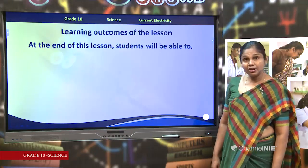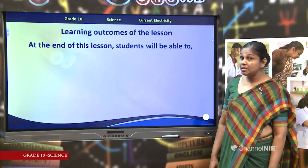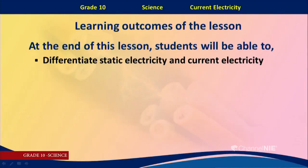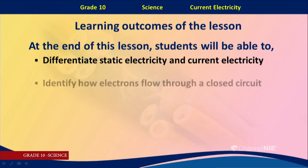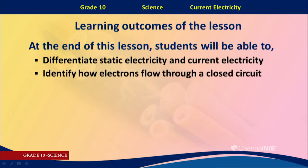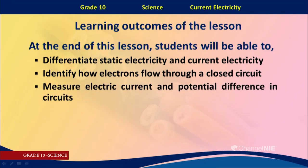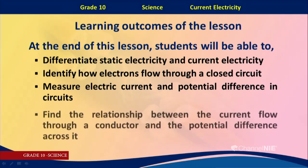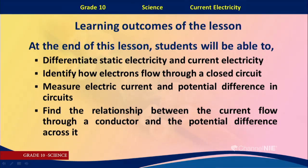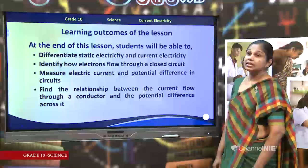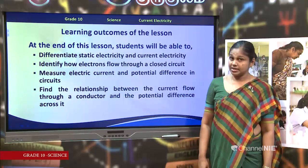Children, at the end of this lesson you will be able to: differentiate Static Electricity and Current Electricity; identify how electrons flow through a closed circuit; measure electric current and potential difference in circuits; and find the relationship between the current flow through a conductor and the potential difference across it. These are the learning outcomes of the lesson today.